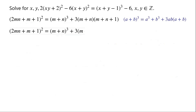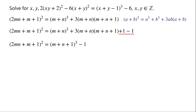So we add 1 and minus 1 on the right side of the equation. Then the first 3 terms on the right-hand side of the equation equal (m plus n plus 1), all cubed. So the equation becomes: (2mn plus m plus 1), all squared, equals (m plus n plus 1), all cubed, minus 1. Rearranging, we have: (m plus n plus 1), all cubed, minus (2mn plus m plus 1), all squared, equals 1.